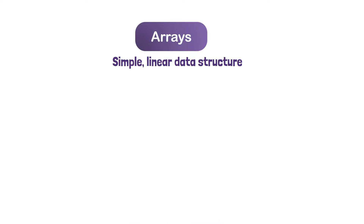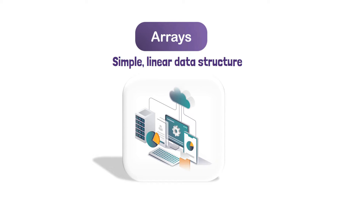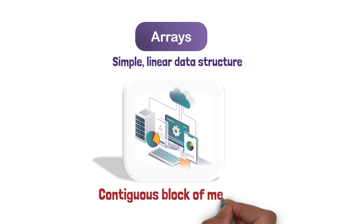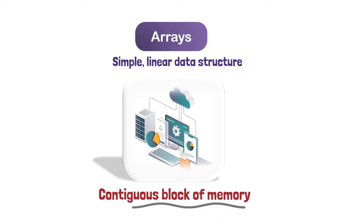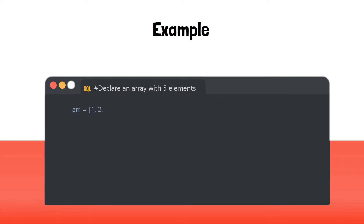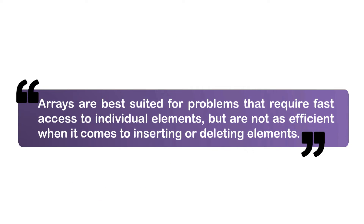Arrays. An array is a simple, linear data structure that stores a collection of elements in a single, contiguous block of memory. Elements are stored in a contiguous block of memory and are accessed using an index. Here's an example of how you might declare an array in a programming language like Python. Arrays are best suited for problems that require fast access to individual elements, but are not as efficient when it comes to inserting or deleting elements.